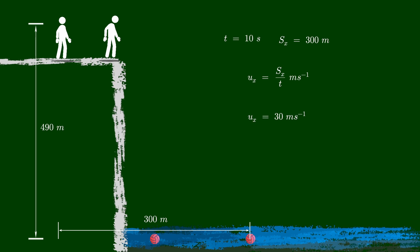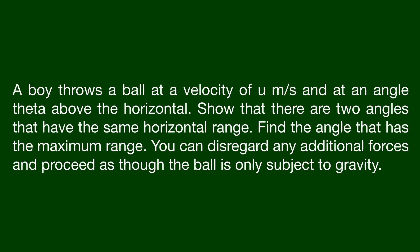I hope this explanation was helpful. Let's take a look at another example. In this example, we will look at the angle that would give the maximum horizontal range. A boy throws a ball at a velocity of u meters per second and at an angle theta above the horizontal. Show that there are two angles that have the same horizontal range. Find the angle that has the maximum range. You can disregard any additional forces and proceed as though the ball is only subject to gravity.